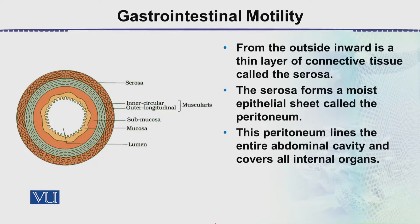From the outside inward, the outermost layer is the serosa. Next to it is the muscular layer, which consists of the inner circular and the outer longitudinal muscles. Next is the submucosa, which is orange in color, and then the mucosa.